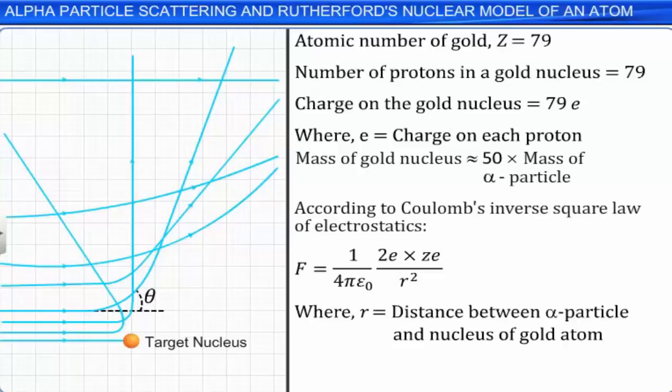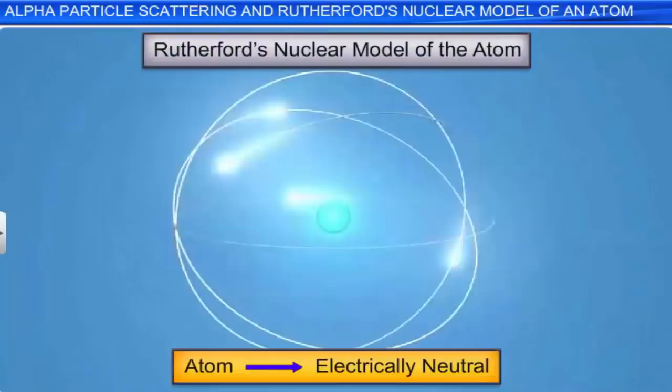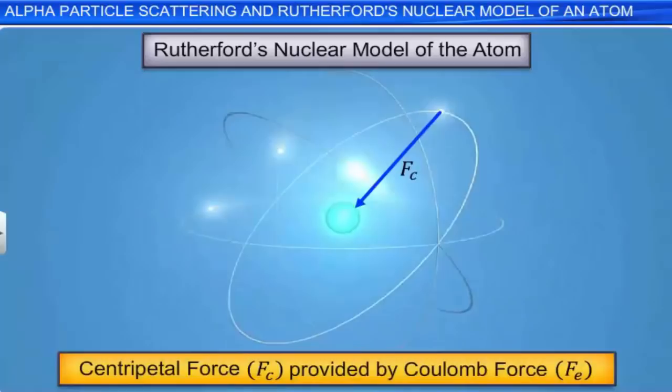According to the Rutherford model of the atom, the atom is electrically neutral. It was proposed that the centripetal force Fc on the revolving electrons was provided by the Coulomb force Fe of attraction between the electron and the nucleus, to keep them in their orbits.